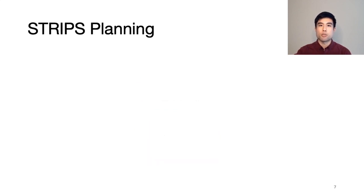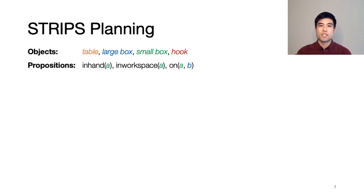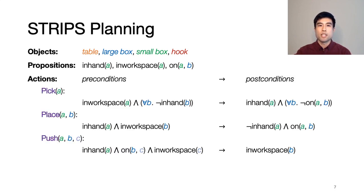The symbolic portion of our framework is formulated as a STRIPS planning problem. A STRIPS problem is defined by five components. First is a set of objects. Next is a set of propositions. These are true-false statements that define the properties of all the objects, and the combinations of these true-false statements fully describe the symbolic state of the world.